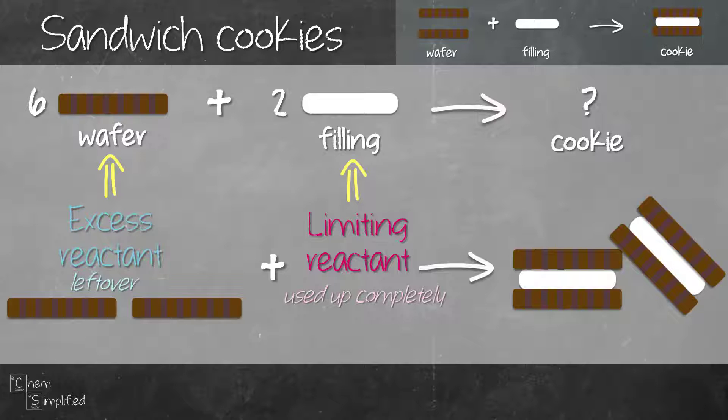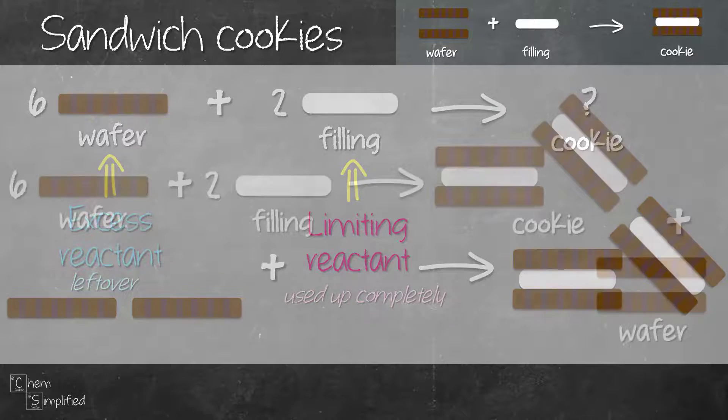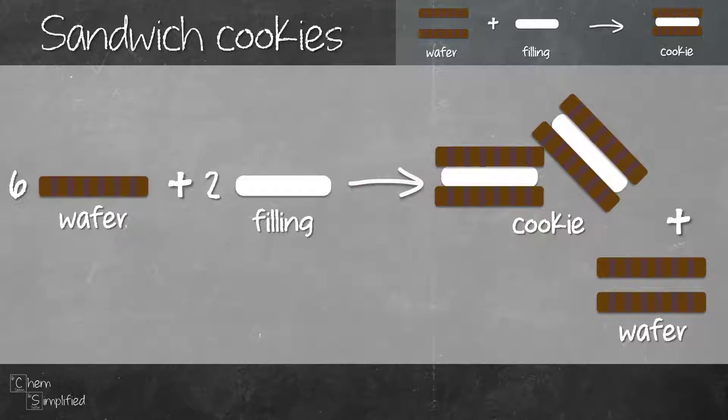If we were to rewrite our sandwich cookie reaction, this is how it'll look like. The reactant that is leftover, that's the excess reactant. The one that's used up completely, meaning we don't see it appearing on the product side, that is our limiting reactant.